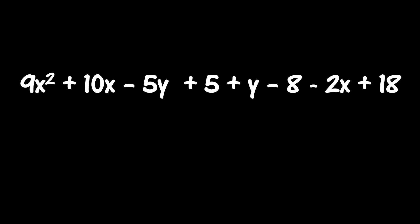For our last example, let's try it without the color coding. The final expression is 9x squared plus 10x minus 5y plus 5 plus y minus 8 minus 2x plus 18.